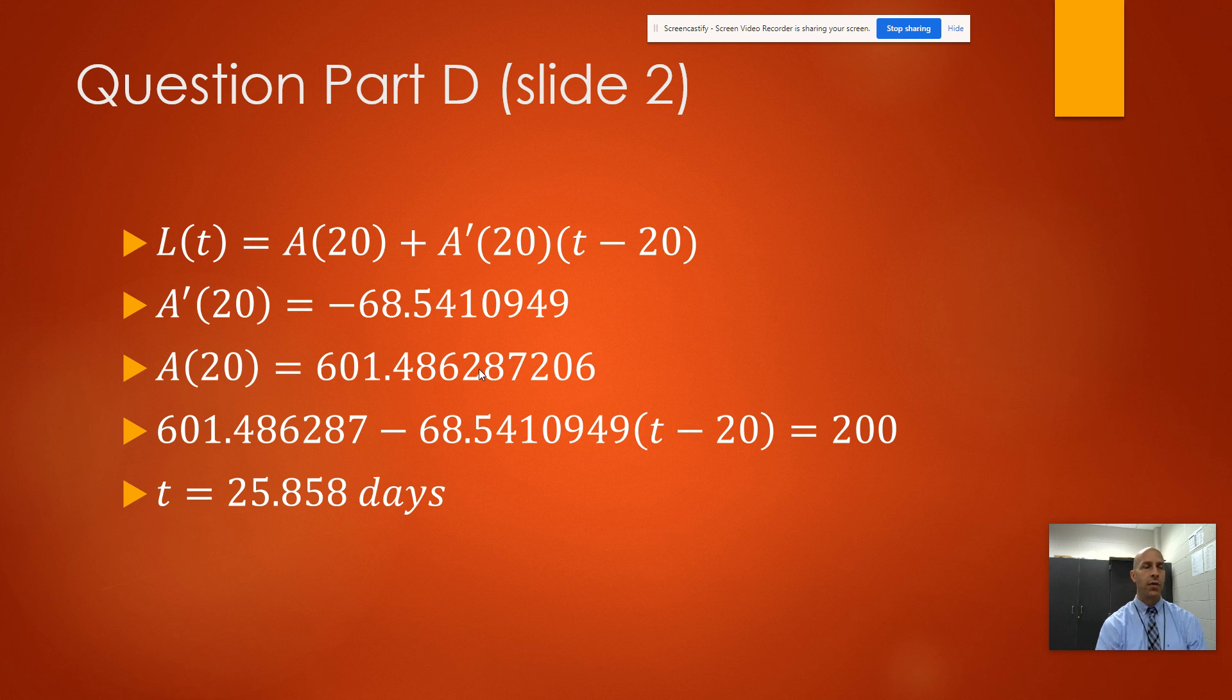This is going to be out of four points. Obviously there's going to be a point for the days, a point for the equation, a point for the y value and for the A(20), and there's also going to be a point for the A'. That's how you would score my free response problem, and that will be that.